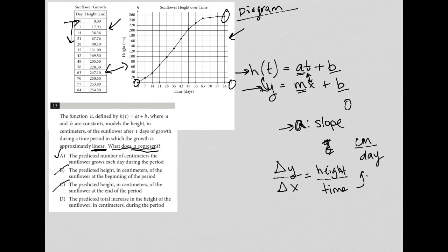And then lastly, choice D, the predicted total increase in the height of the sunflower in centimeters during the period. Well, that gets closer to the right answer, but slope is not based upon a total increase. It's always based upon a unit increase. We want centimeters per day for slope, not how many centimeters over the entire 84 days. So D is out for that reason, making me much more confident that answer choice A is the correct answer.